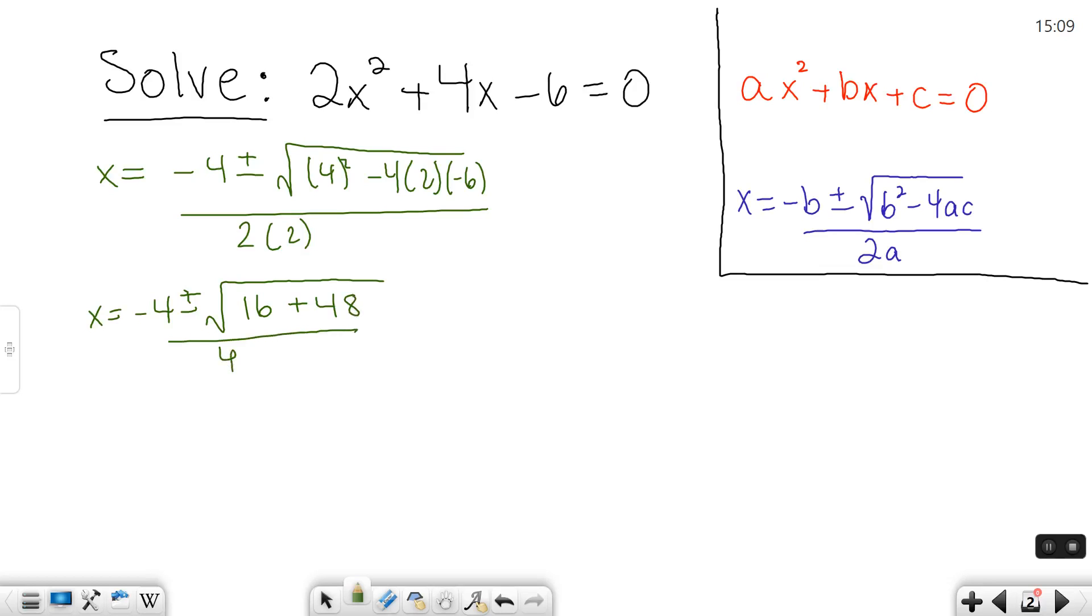So continuing to simplify, negative 4 plus or minus, make sure that's a plus or minus sign. 16 plus 48 is 64 and the square root of 64 is 8. So we have 8 on top, 4 on the bottom.